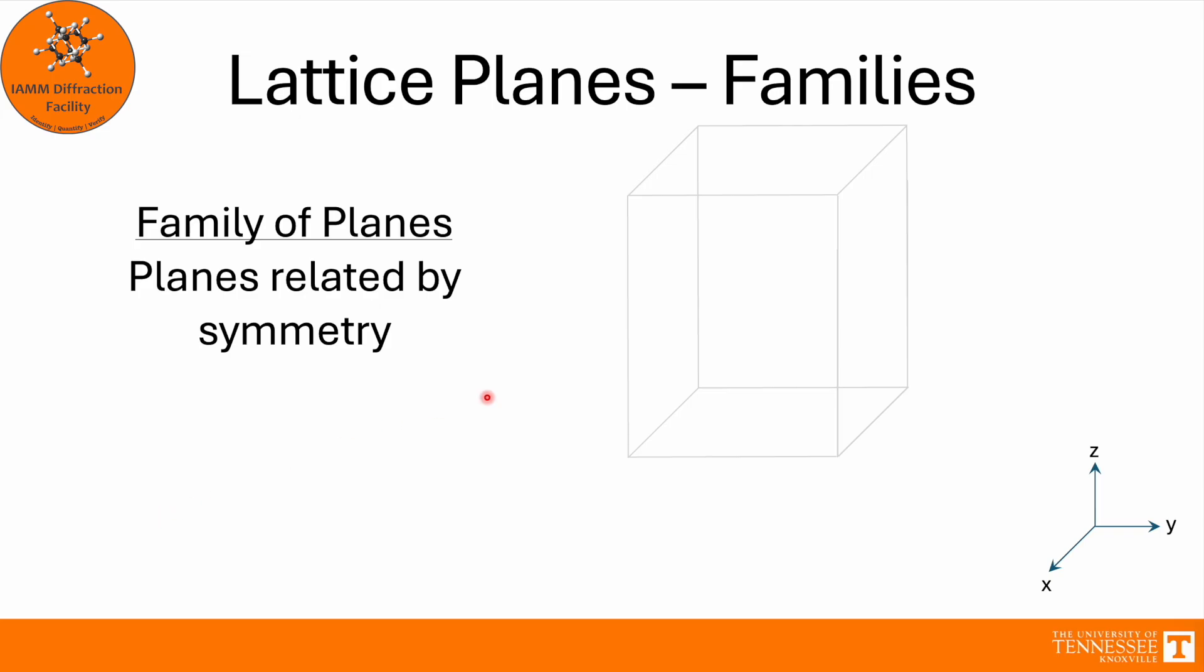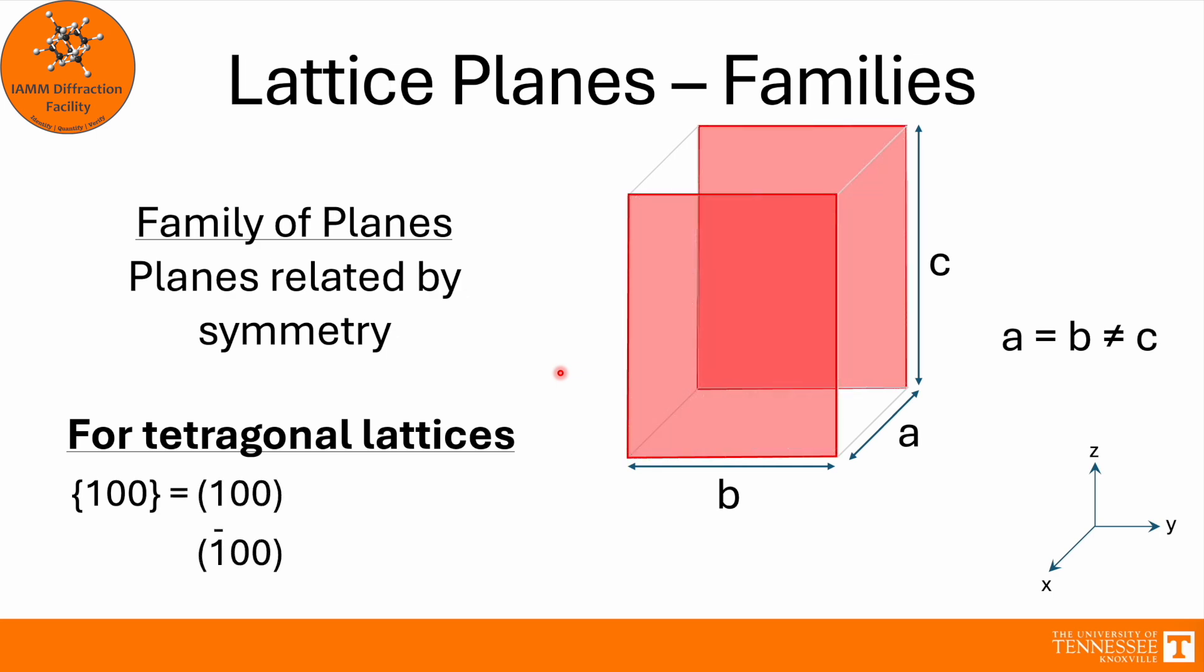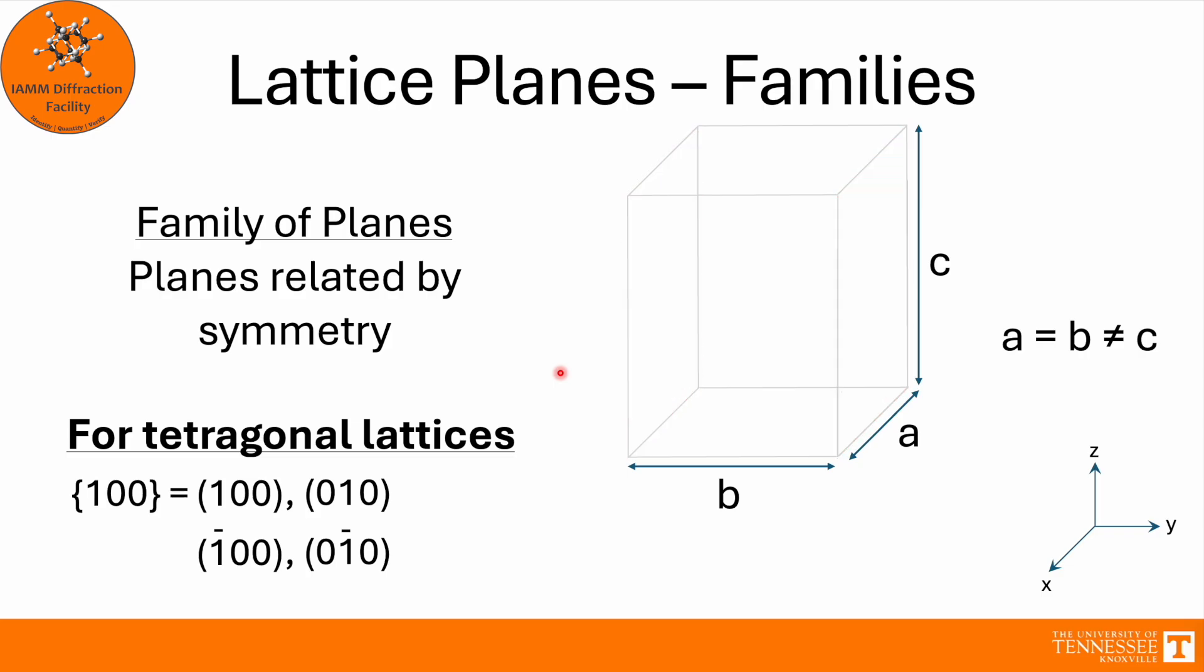Now, let's take this cubic system, extend the z-axis, so that we have a tetragonal system. Well, now, a equals b, but they do not equal c. So when we look for the {1,0,0} family of planes, we still get that the (1,0,0) planes equal the (0,1,0) planes. That spacing from one plane to the next is the same. But when we look at the (0,0,1) planes, that's now different. So then we find that these two planes are not related to these other four planes due to symmetry. So then those last two go away, and these make up our {1,0,0} family of planes for the tetragonal crystal system.